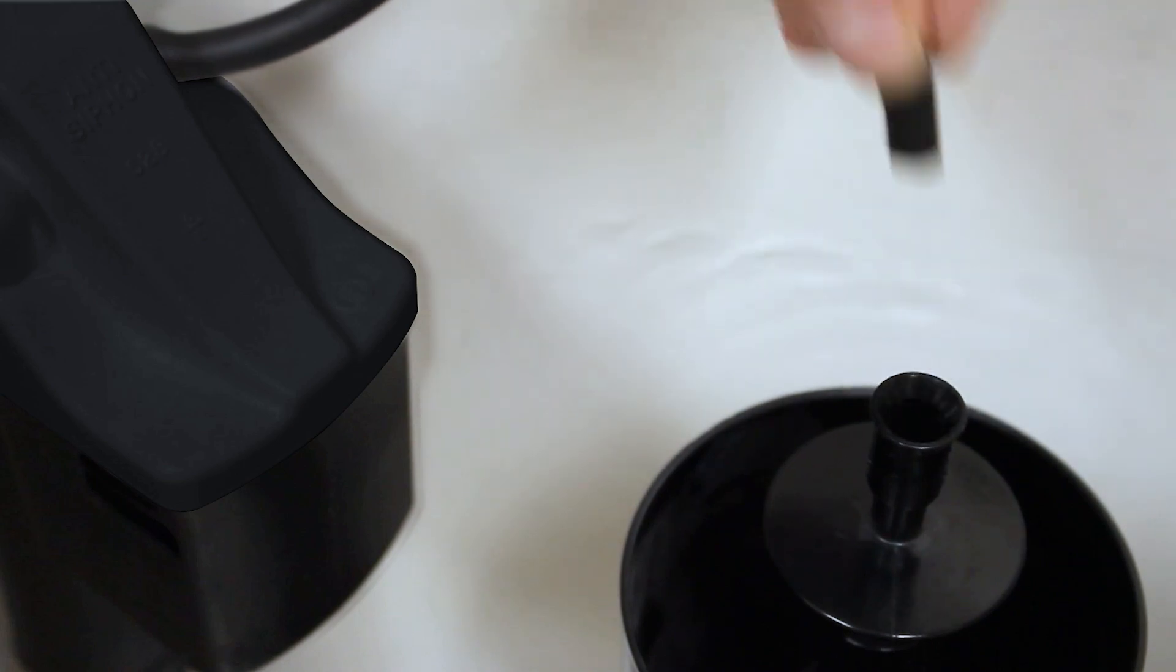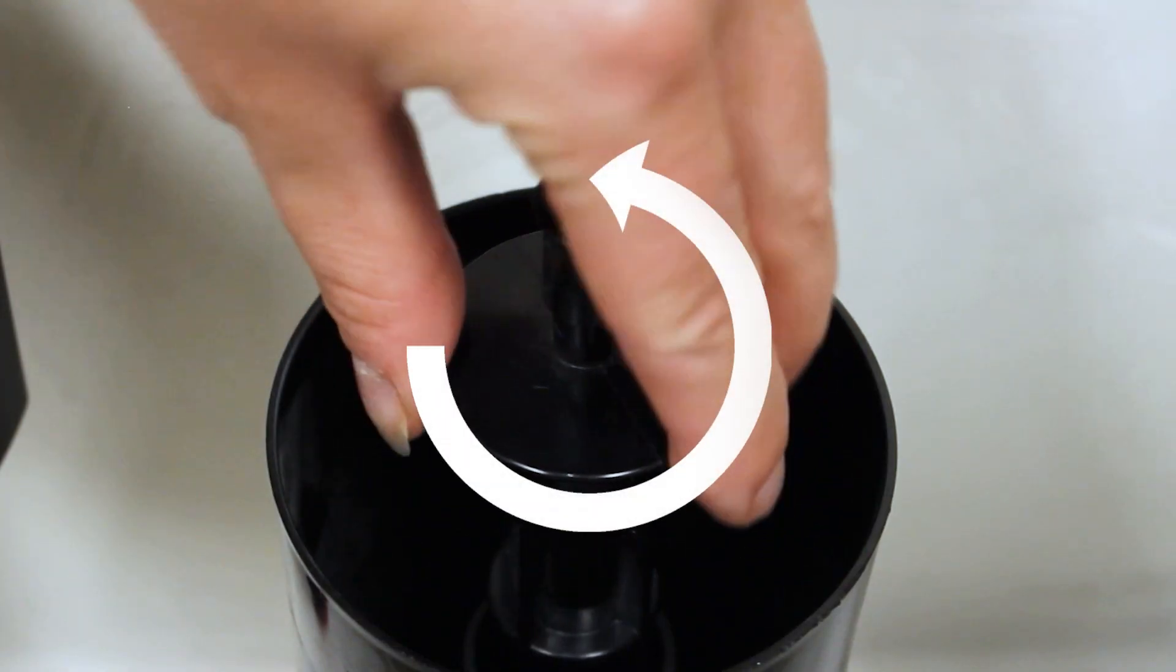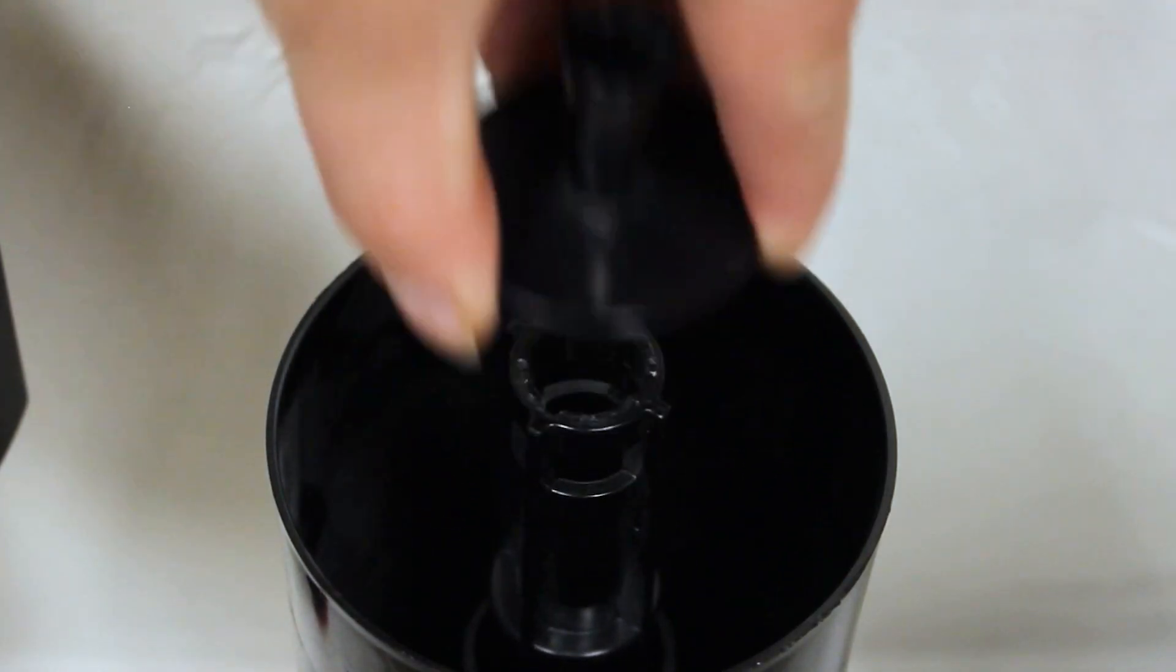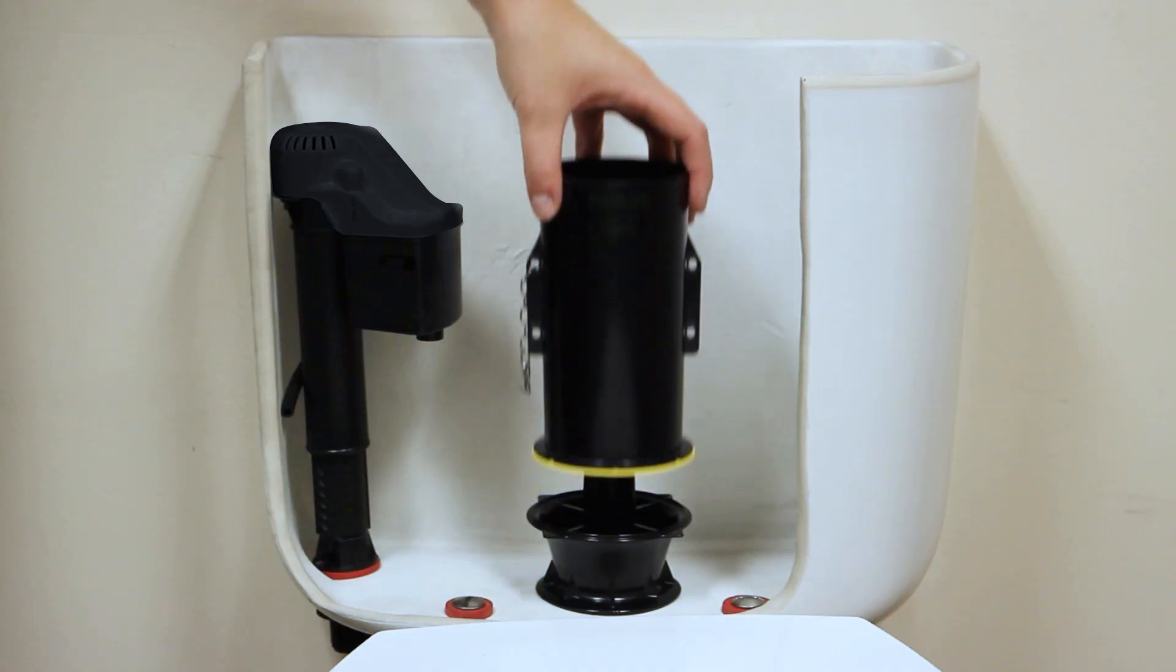Remove the refill tube and turn the flush tower cap counterclockwise to remove it from the assembly. Pull the flush tower up to access the seal.